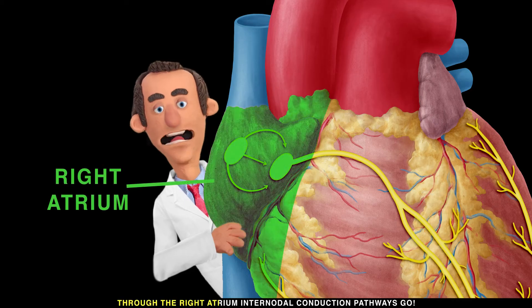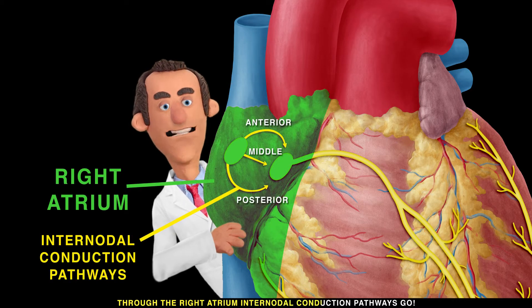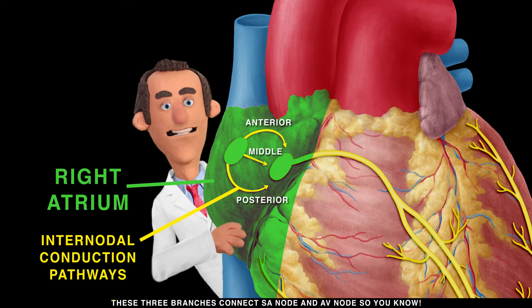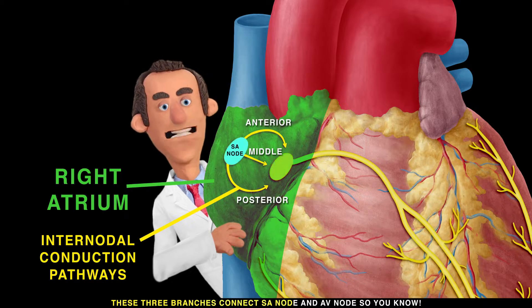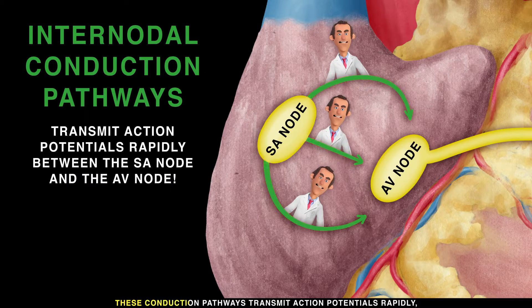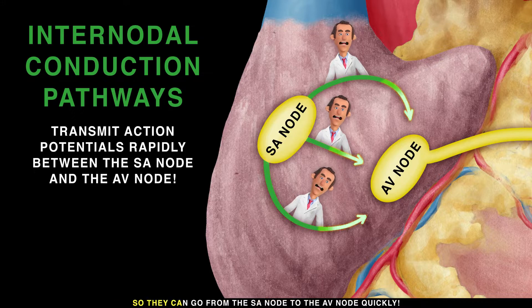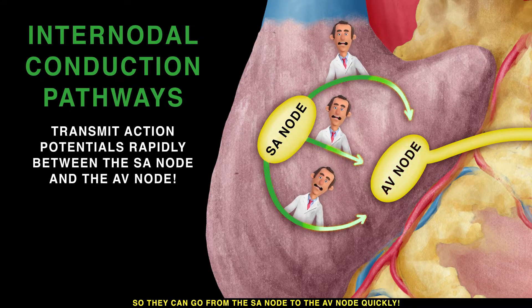Through the right atrium, internodal conduction pathways go. These three branches connect the SA node and AV node. These conduction pathways transmit action potentials rapidly, so they can travel from the SA node to the AV node quickly.